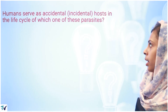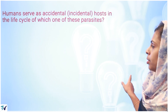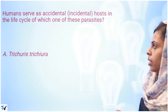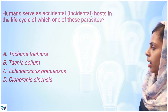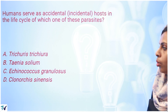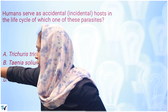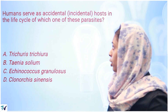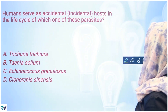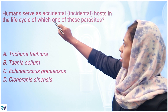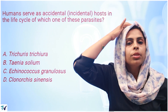Question: Human serves as an accidental host in the life cycle of which of these parasites? The options are Trichuris trichiura, Taenia solium, Echinococcus granulosus, and Clonorchis sinensis. Here we have a question — human serves as an accidental host.